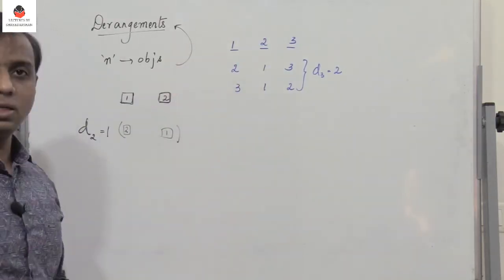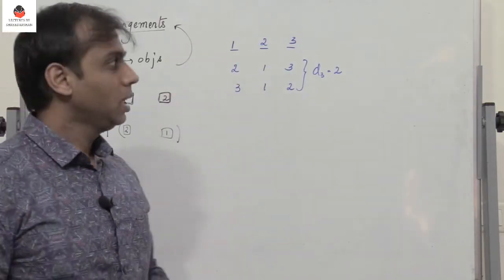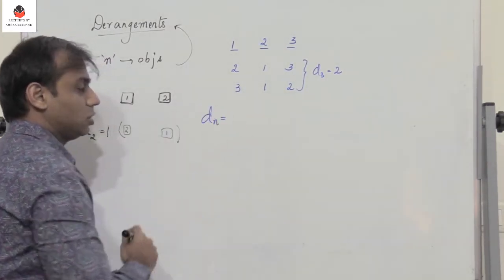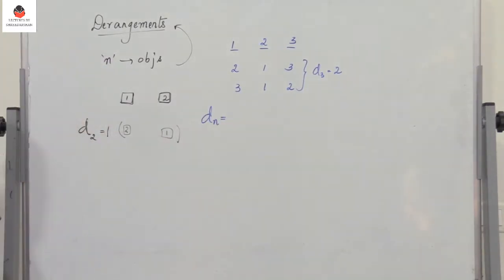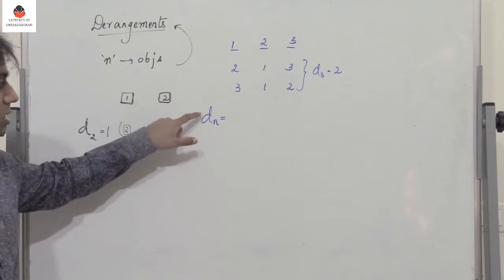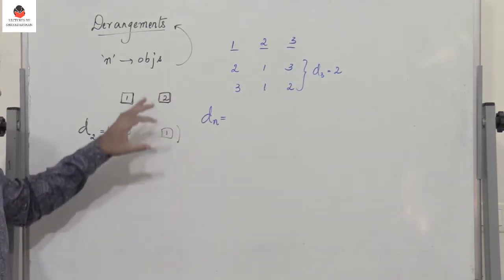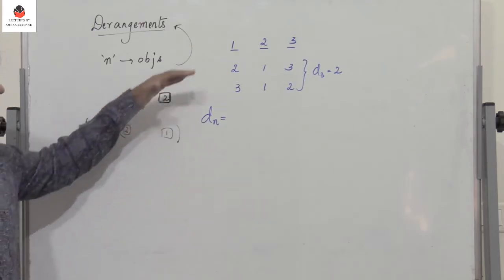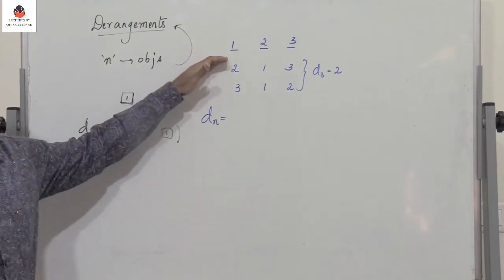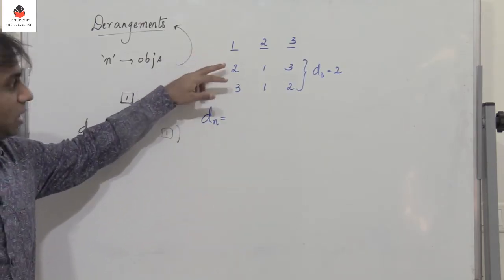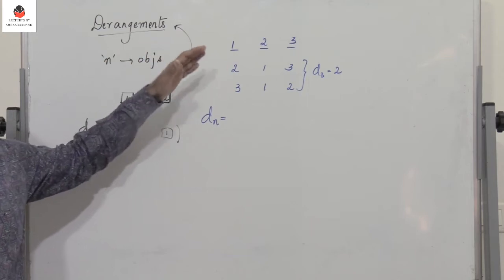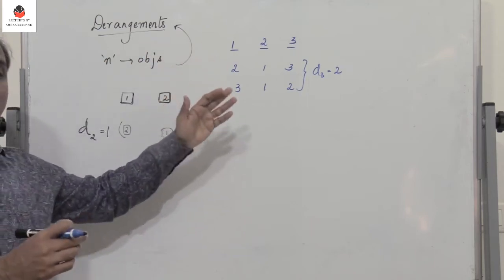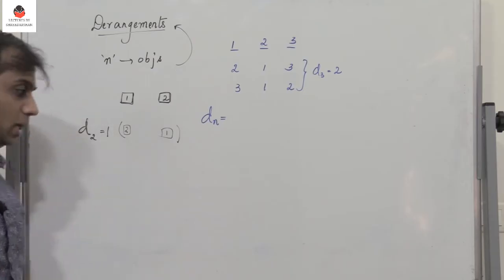This is referred to as derangements. For n objects, we write Dn. The number of derangements is given by Dn. Now if the number of objects is small — say two or three — we can find the number of derangements by trial and error. But if there are n objects, there is a formula.